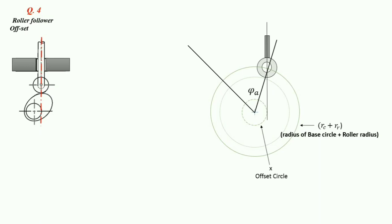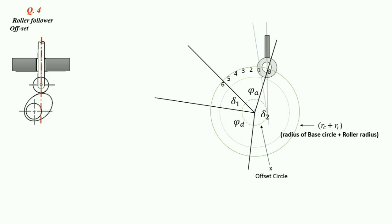Now we will divide this circle into angles: phi A, delta 1, phi D, and delta 2. We will divide phi A into 6 equal parts. Then we will draw lines tangent to the offset circle and passing through the points, and we will mark the displacement on these lines.